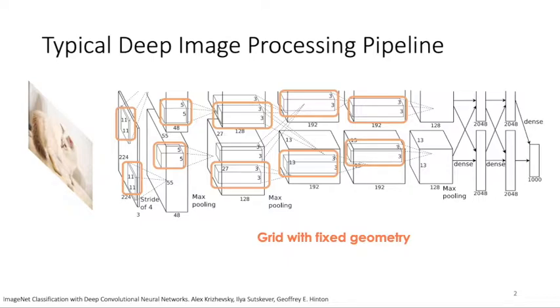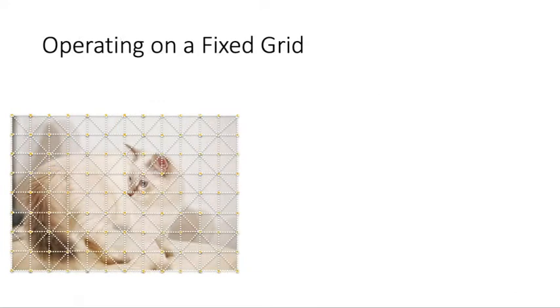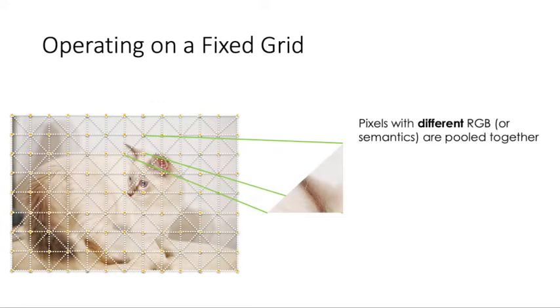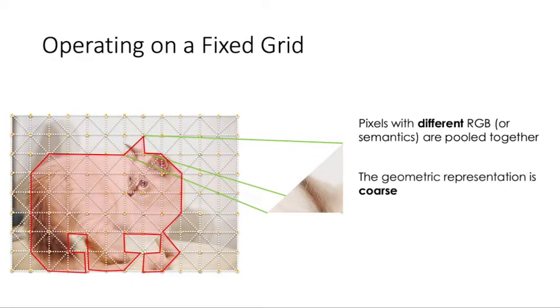In this paper, we argue for more efficient representation using deformable grids. By operating on fixed grids, pixels with different RGB colors or semantics are processed together. And since the grid edge is not aligned with actual image boundaries, the geometric representation is very coarse.